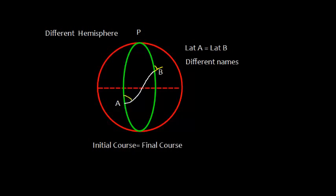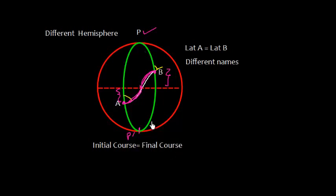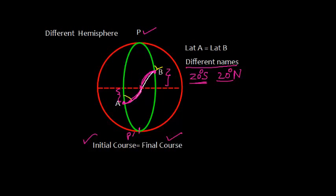Both points are in different hemispheres. Point B is in the northern hemisphere and point A is in the southern hemisphere. The great circle will curve towards pole B, and from the equator to point B — since this is in the northern hemisphere — the great circle curves towards the northern pole. In the special case where the latitude values are the same but different names, say A is 20° South and B is 20° North, the initial course and final course of the great circle track will remain the same.